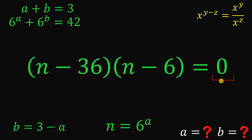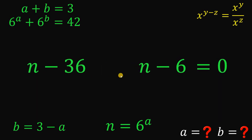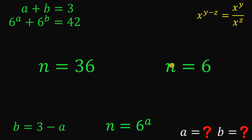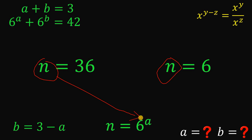Since it is equal to 0, we can say at least one factor must equal 0. So we have N minus 36 equals 0, or N minus 6 equals 0. Solving for N: on the first equation, add 36 to both sides; on the second, add 6 to both sides. We get N equals 36 or N equals 6. But remember, N must equal 6 raised to the power of A.